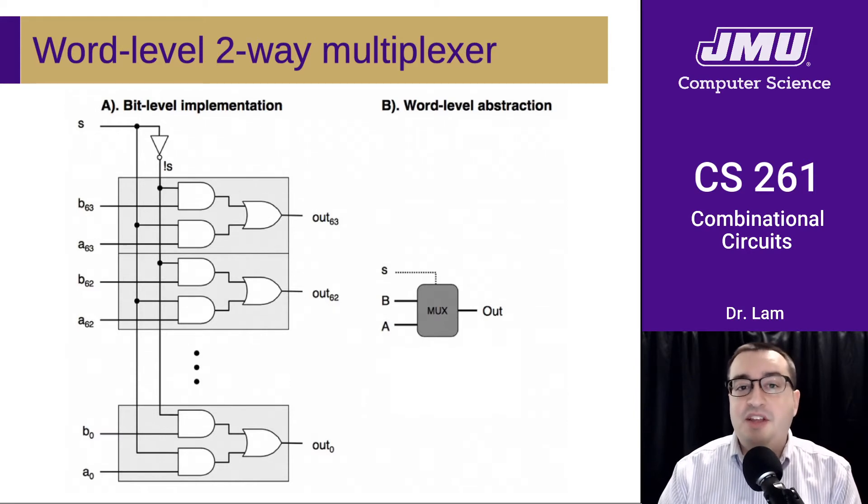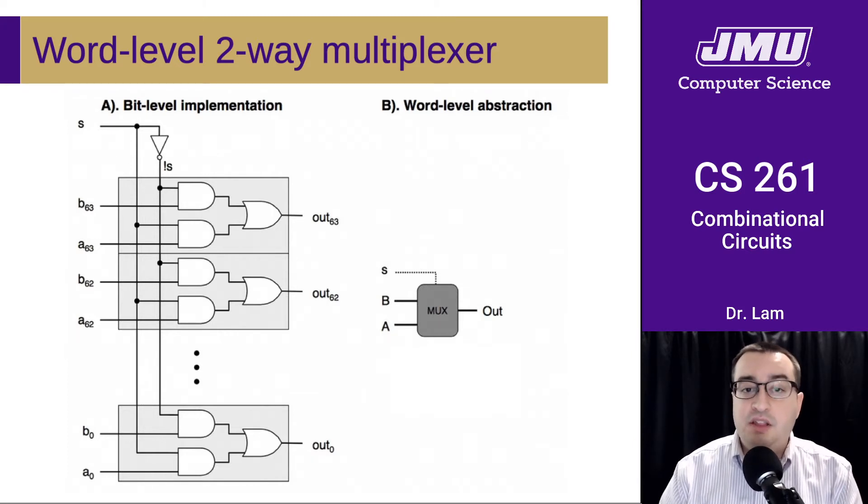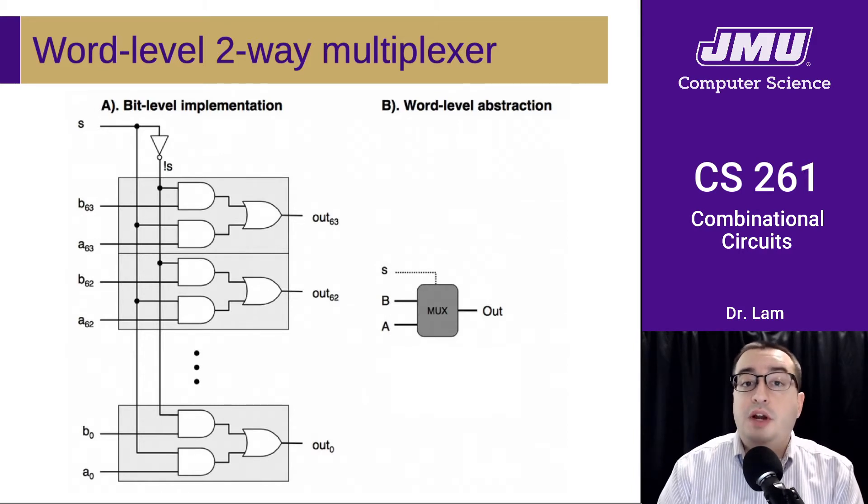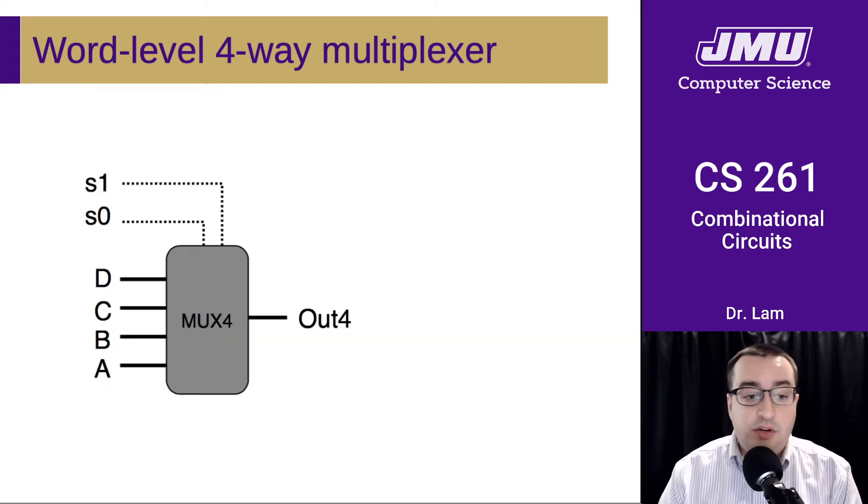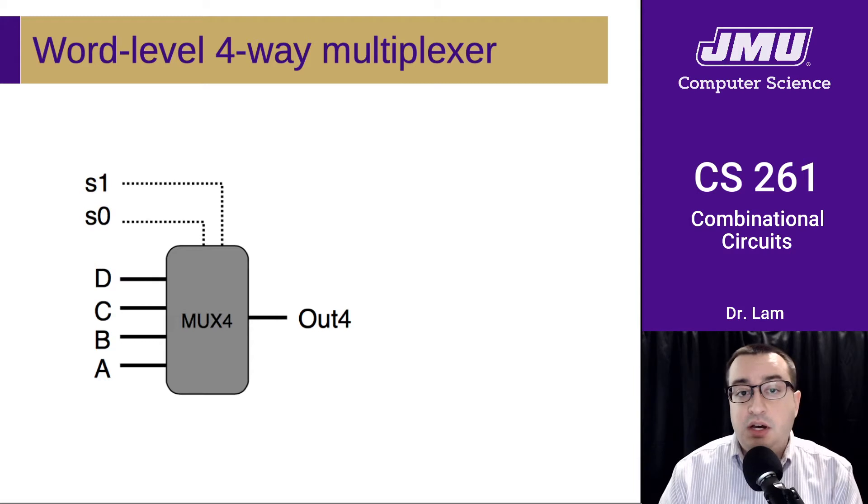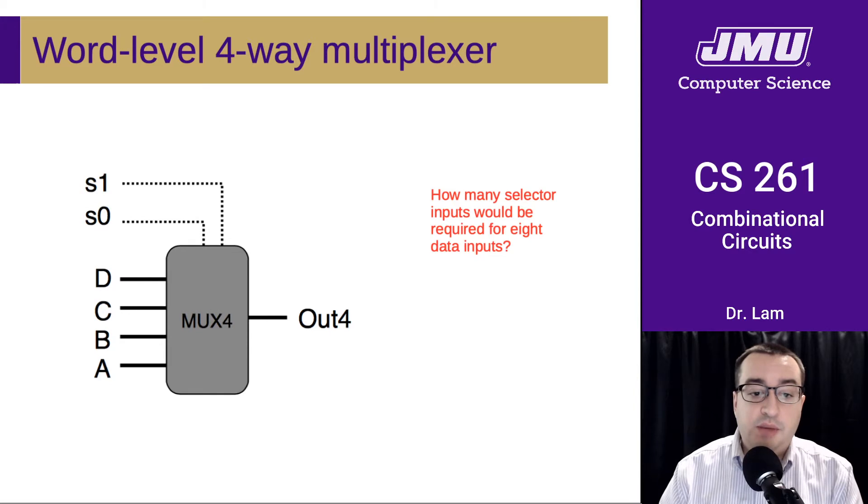It's worth thinking about how we might extend this to select between more than two inputs. So maybe take a minute and pause the video and think about how you would expand this to be able to handle two more inputs coming in. Well, the way you would handle it is you'd need more selector bits. And so you'd have to start building up a slightly more complicated circuitry in there. But then you'd have a four-way multiplexer because note that there are four possible combinations of these two inputs. So maybe 0,0 corresponds to A, 0,1 corresponds to B, 1,0 corresponds to C, and 1,1 corresponds to D. And so basically you can choose which of these four outputs you get based on the inputs. So it might be worth pausing the video and thinking about how many selector inputs would be required for eight data inputs.